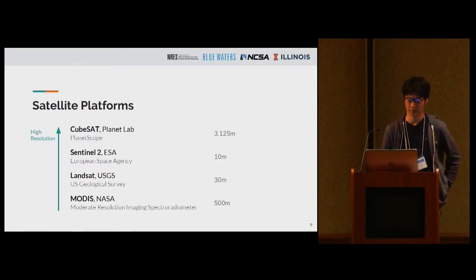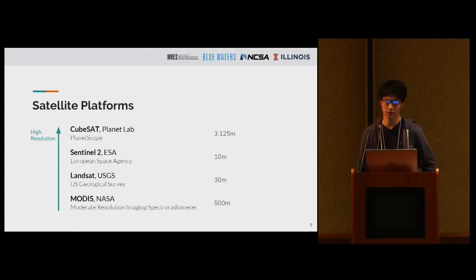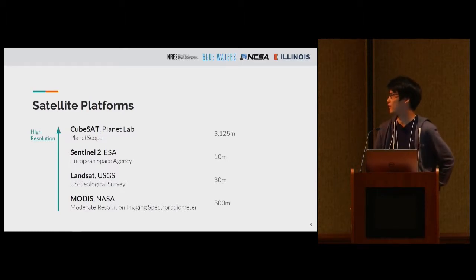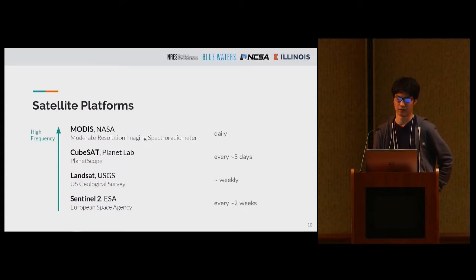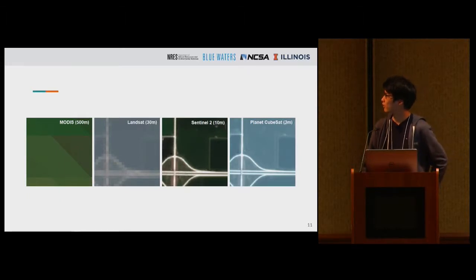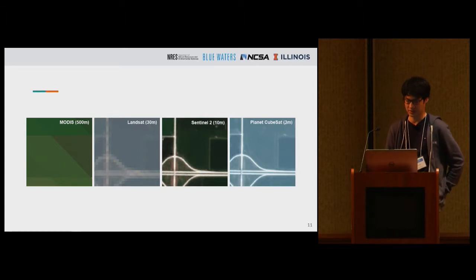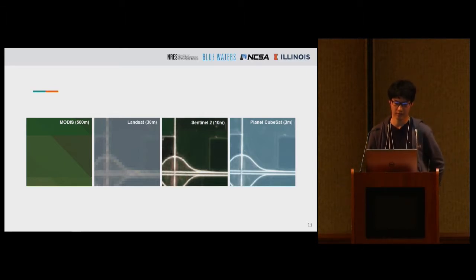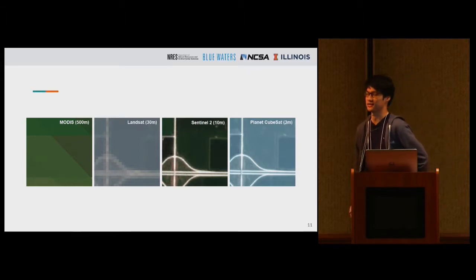Here is a list of some of the platforms we are using. Starting from the bottom, we have NASA's MODIS mission with 500-meter spatial resolution. Going up, we have Landsat and Sentinel-2 from the European Space Agency, which have finer resolutions. But ranked by frequency, MODIS — with only 500-meter resolution — is the only one with daily data coverage. For meaningful field-level agricultural analysis, we really need at least 30-meter resolution.